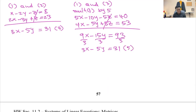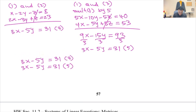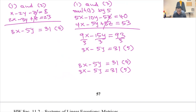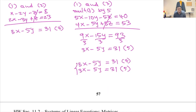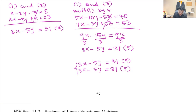Now I have equations four and five. Looking at them closely, I see they are identical — the equations are the same. When you have identical equations, it's the same scenario as two planes lying on top of each other — the same line. This means we have a dependent system.